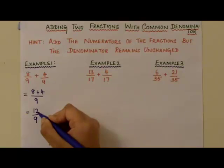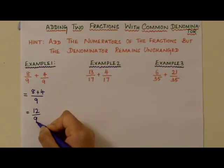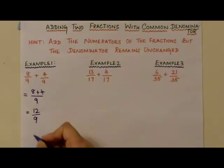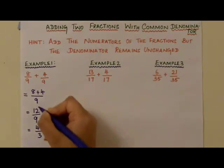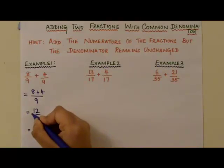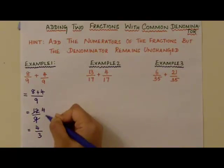You can see that 12 is 4 times 3 and 9 is 3 times 3. So simplifying further, we have 4 by 3 because 12 and 9 can be simplified by 3.